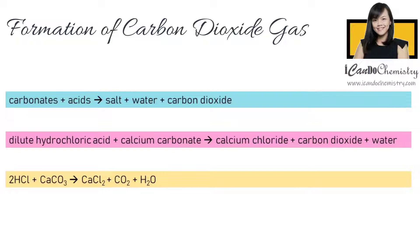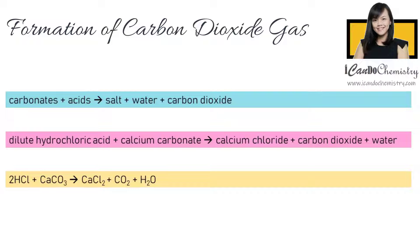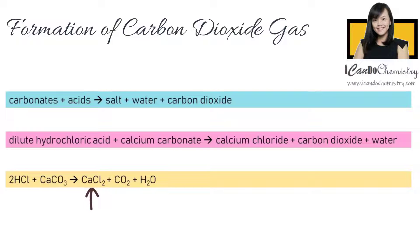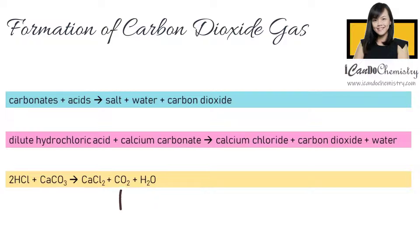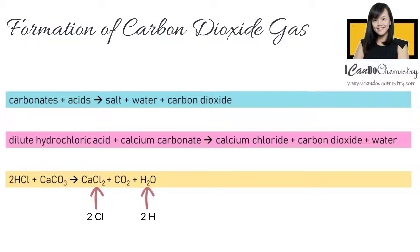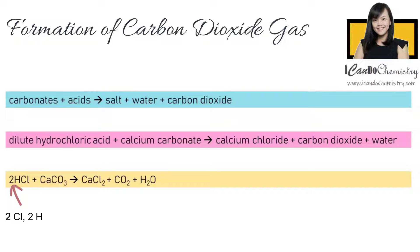The chemical equation is HCl, which is hydrochloric acid, reacts with CaCO₃, which is calcium carbonate, to produce the salt, which is calcium chloride CaCl₂, and water H₂O, and carbon dioxide CO₂. We note that there are 2Cl and 2H on the right-hand side of the equation, so we balance the equation by giving a coefficient of 2 for HCl.